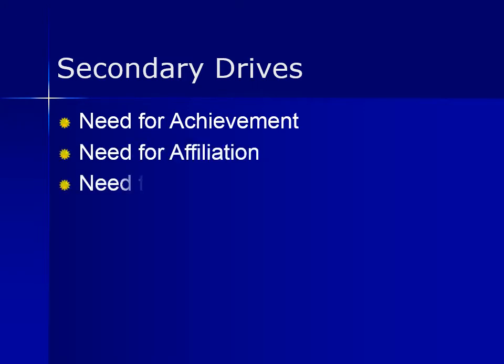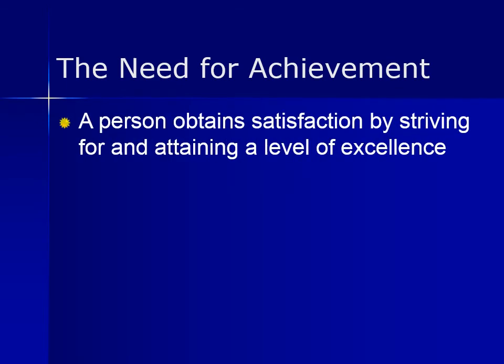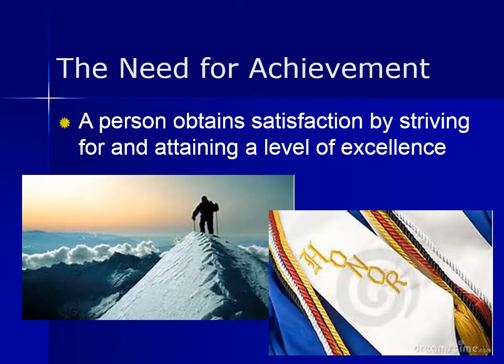Now let's look at secondary drives: the need for achievement, the need for affiliation, and the need for power. Starting with the need for achievement — this is the need to achieve, excel, and succeed to a certain level of excellence. A person with this need will set goals that are challenging but realistic, challenging enough to feel a sense of accomplishment, but realistic because when a goal is unrealistic, its achievement is more likely due to chance rather than personal skill. So they choose tasks of intermediate difficulty. A person with a high need for achievement prefers to work alone or with other high achievers, and does not necessarily need praise or recognition because achievement of the task is their reward.